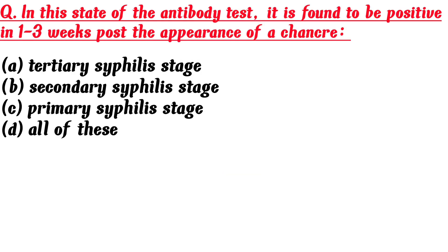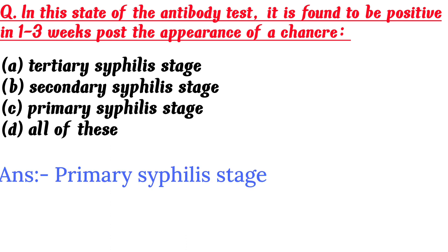In this stage, the antibody test is found to be positive 1-3 weeks post the appearance of a chancre: A. Tertiary syphilis stage, B. Secondary syphilis stage, C. Primary syphilis stage, D. All of these. Answer is C. Primary syphilis stage.